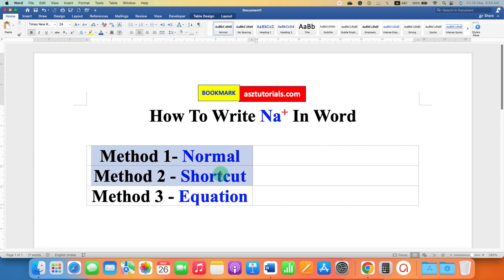The first two methods are used for writing Na plus as text and the last method is used if you are writing an equation, a chemical equation.